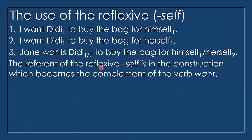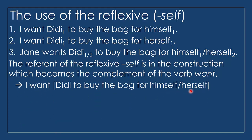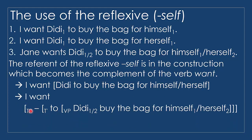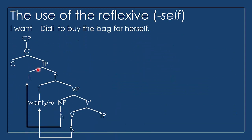We can say that the reference of the reflexive 'self' is in the construction which becomes the complement. We cannot have 'himself' or 'herself' refer to a person in the matrix clause or main clause. We can draw the structure of the sentence 'I want Duty to bind the bag for himself or herself.' The scope of 'himself' or 'herself' is within this embedded construction. We have a TP with an empty specifier, and Duty is a specifier of V and moves to the specifier of T.